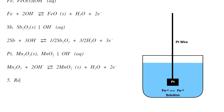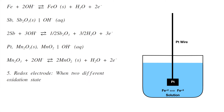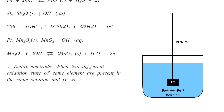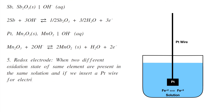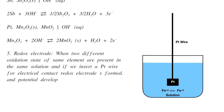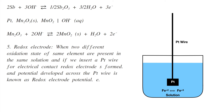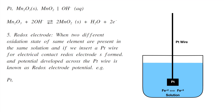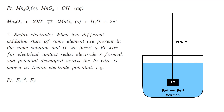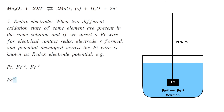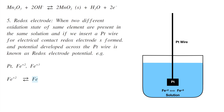The last type is the redox electrode. When two different oxidation states of the same element are present in the same solution and a platinum wire is inserted for electrical contact, a redox electrode is formed. The potential developed across the platinum wire is known as the redox electrode potential. For example, Pt in contact with Fe²⁺ and Fe³⁺: Fe²⁺ → Fe³⁺ + e⁻.